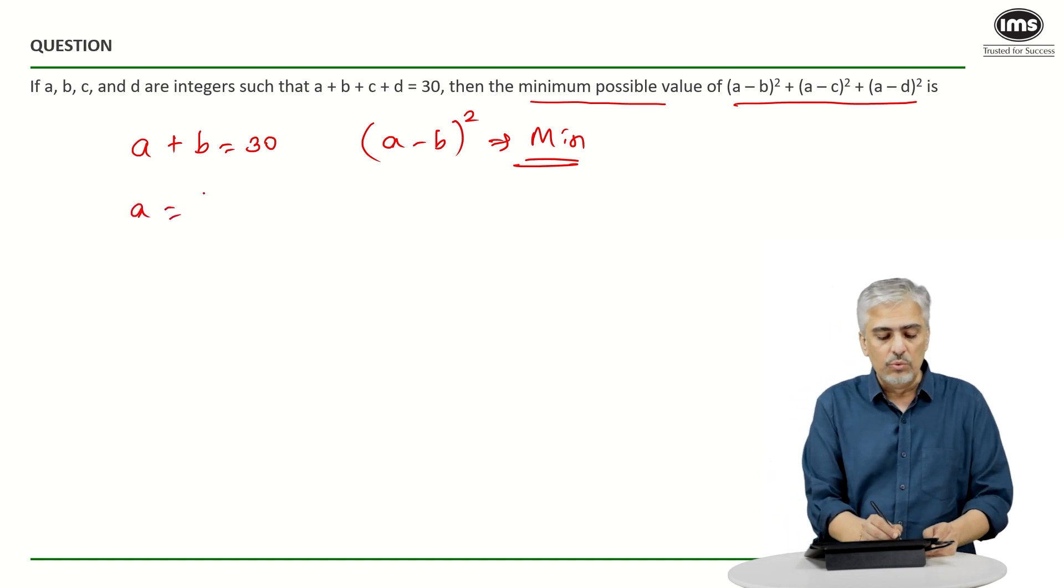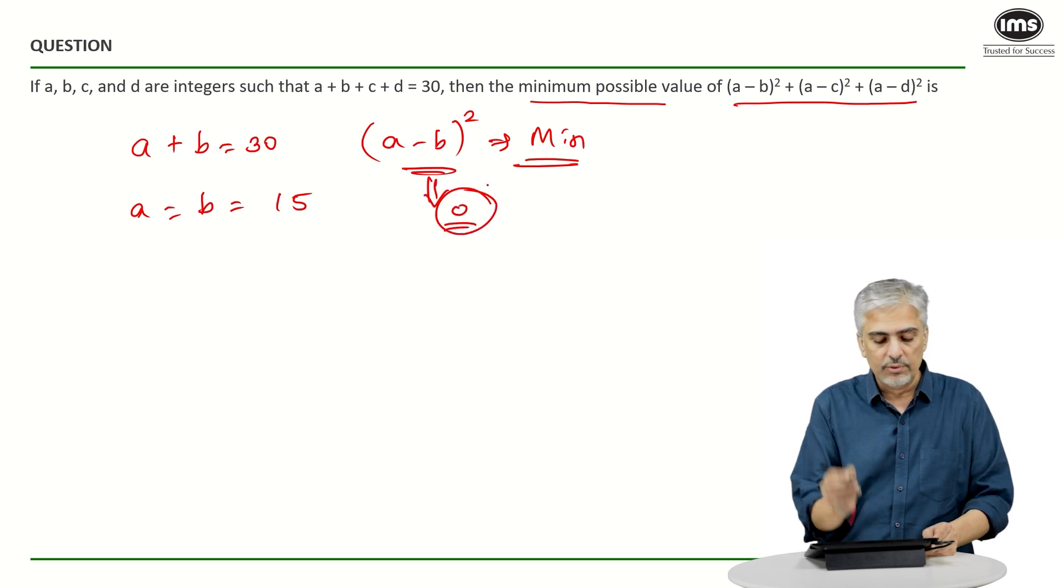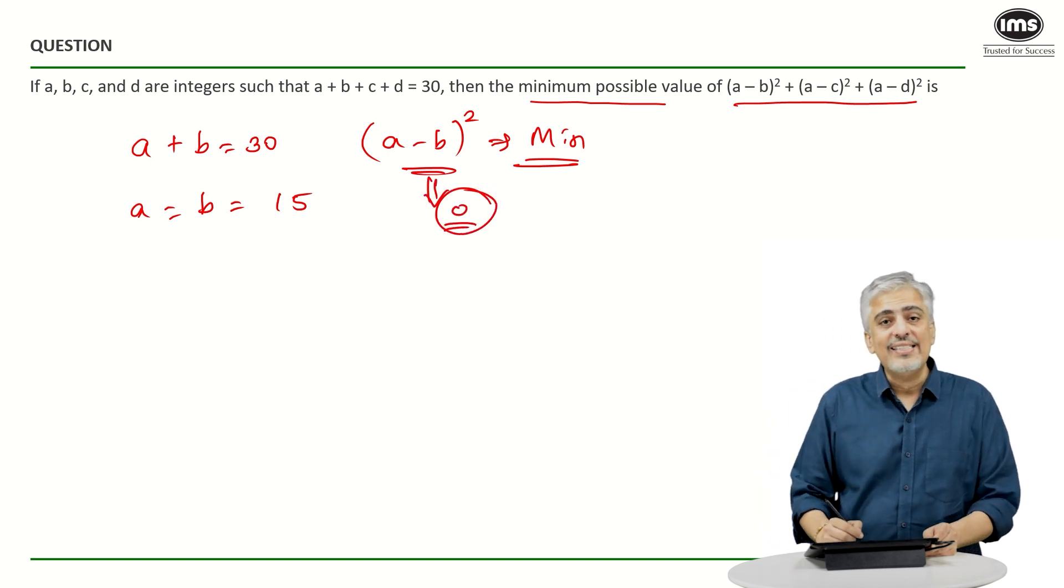Right? If A was equal to B was equal to 15, this answer would have come 0. Right? So, now in this case, what will happen? Again, the same logic has to apply.